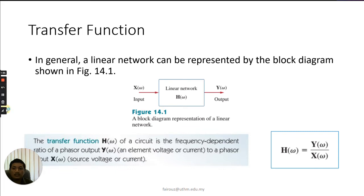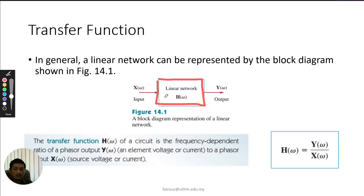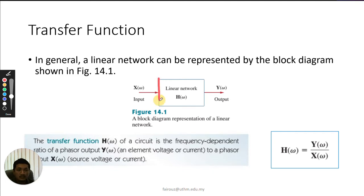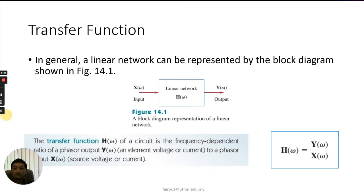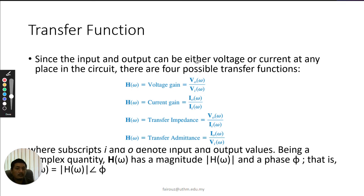In general, a linear network can be represented by a block diagram. Assume this is a linear network or an RLC circuit — any network — represented by a single block. We have the input and the output, so the transfer function of the network is output over input. The output can be either voltage or current, and the input can also be either voltage or current.